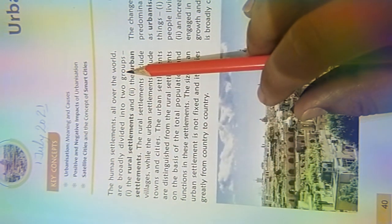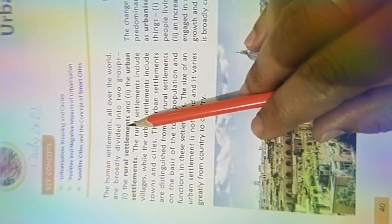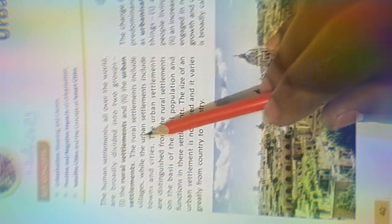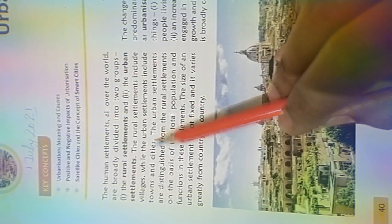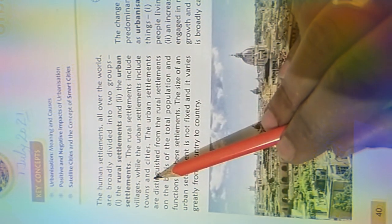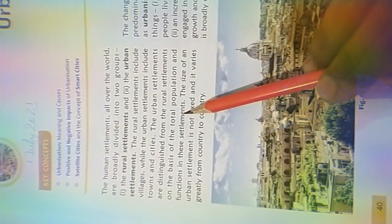The human settlements all over the world are broadly divided into two groups: rural settlement and urban settlement. Rural settlement includes the villages where people live. While urban settlement includes towns and cities. Those who are living in the villages, that we call rural settlement. Urban settlements are distinguished from rural settlements on the basis of the total population and function in these settlements.